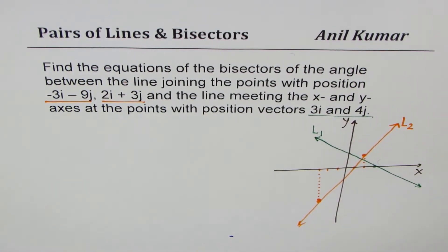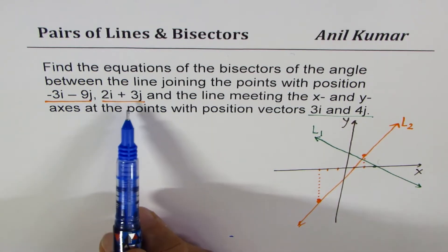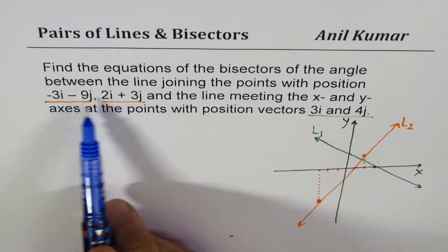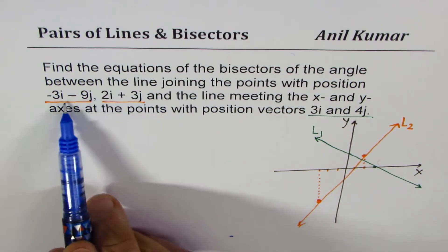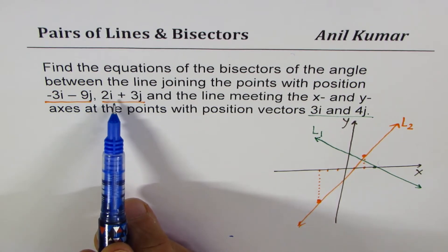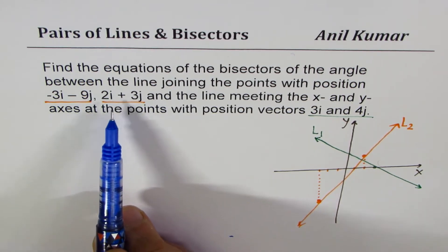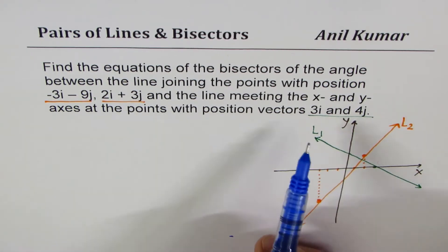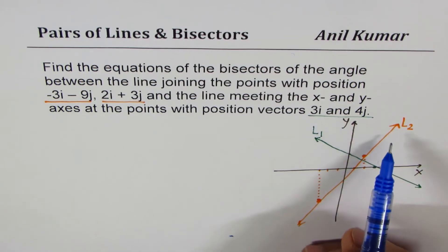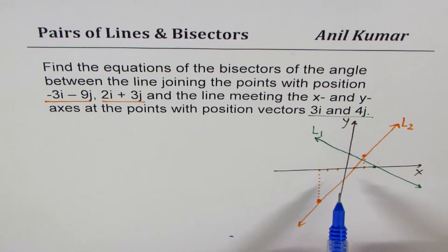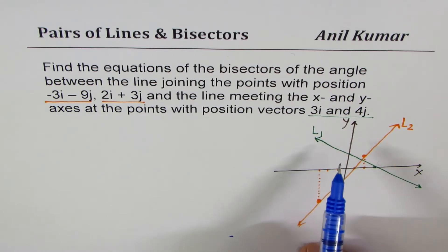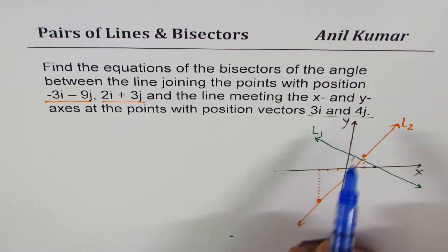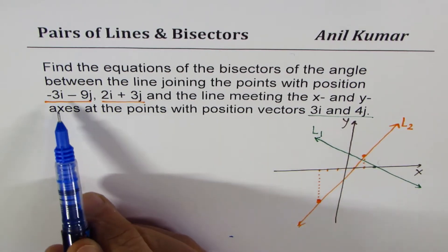In vectors, when you're given the points you can find the direction, and knowing one of the points you can always write the vector equation. But in both cases, the Cartesian equation is more common. So I'll write the equations of these lines in Cartesian form and follow with different types of ways in which it could be done. Let's write down the equation for line L1 first.